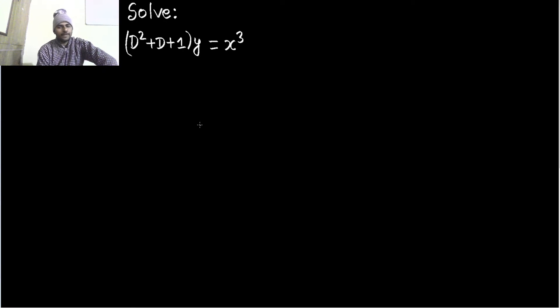For complementary function, we need to first write the auxiliary equation, which is just replace this D by m. So m² + m + 1 equate it to 0.